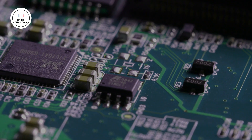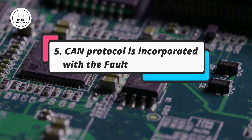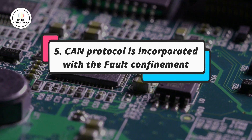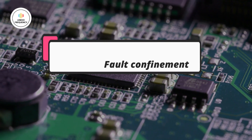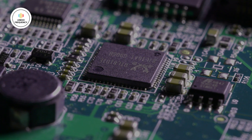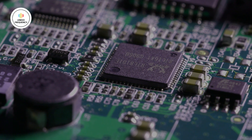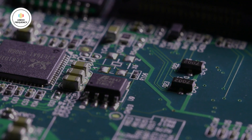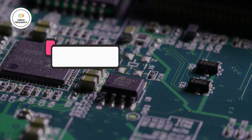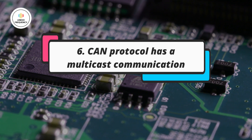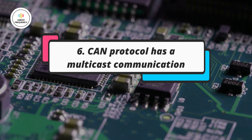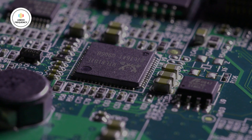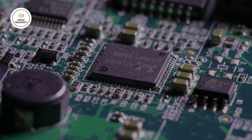The next key feature is fault confinement. CAN incorporates fault confinement mechanisms that prevent faulty nodes from causing network disruption. If a node malfunctions or experiences any kind of error, the rest of the network remains unaffected. The next key feature is multicast. CAN supports both unicast and multicast communication — messages can be addressed to a specific ECU or broadcasted to all other ECUs on the CAN network.